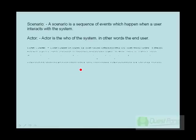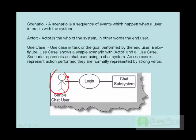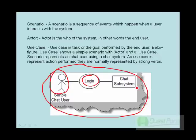There are three important parts of a use case. The first is the actor — the 'who' of the system, in other words the end user. The second is the use case itself — the task or goal. For example, a simple chat user is the actor and 'login' is the use case. Use cases represent actions using strong verbs; 'login' is a verb, an action performed by the chat user. The whole thing together is called the scenario.